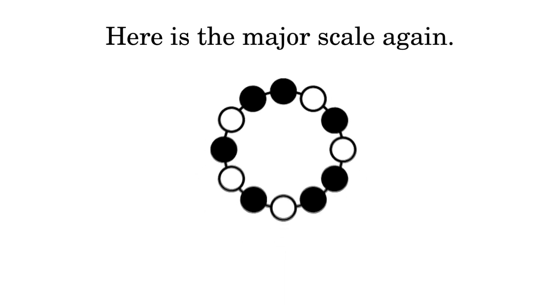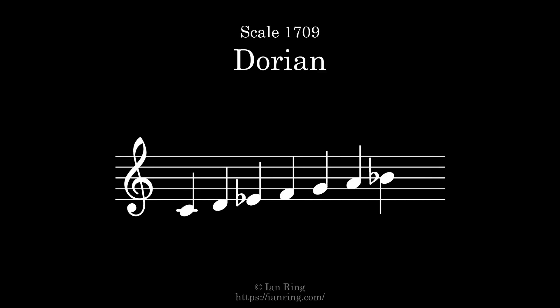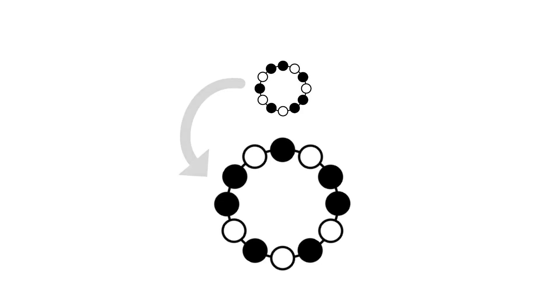Here is the major scale again. If we rotate it like this, we get its second mode, Dorian, which sounds like this. The shorthand for this transformation is T for transposition, and the number two because we moved all the pitches by two semitones.